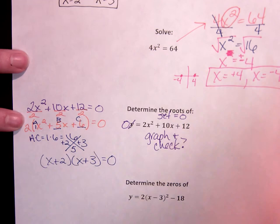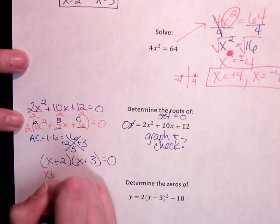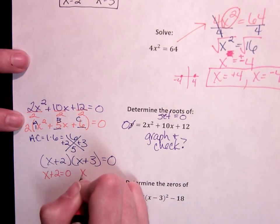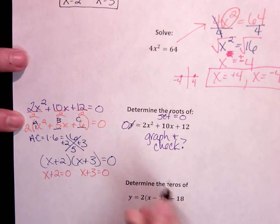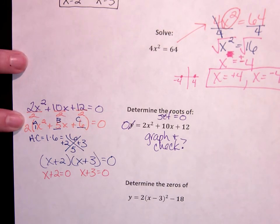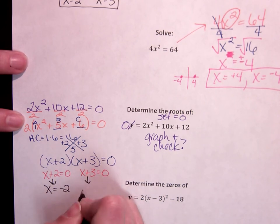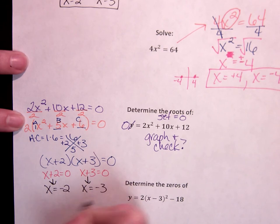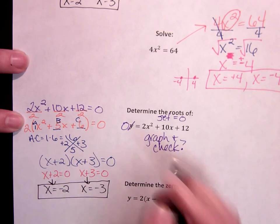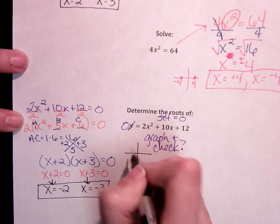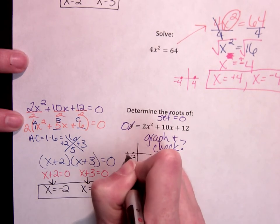When I split those to solve, x plus 2 equals 0 and x plus 3 equals 0. x will equal negative 2 and x will equal negative 3. So I know that on my graph, it goes through negative 2 and negative 3.